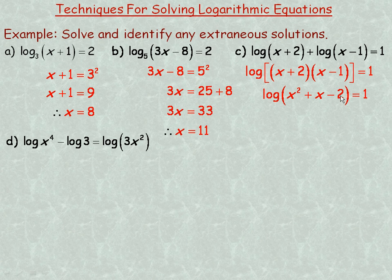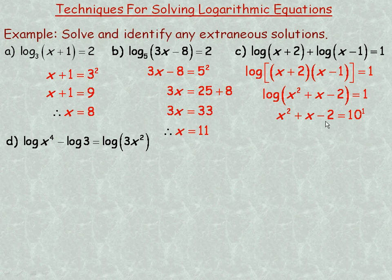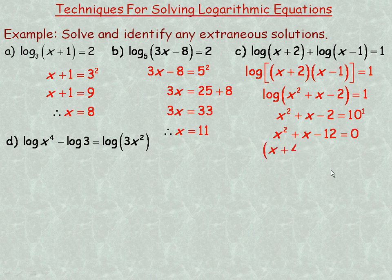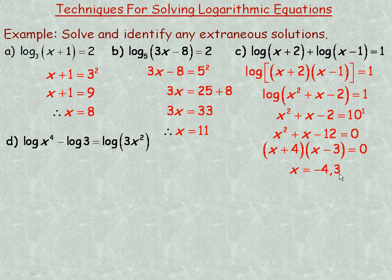Now it's the same kind of equation as a or b: one single logarithm equals a constant. This is the common logarithm, so the base is 10. So 10 raised to the power of 1 equals x squared plus x minus 2, giving x squared plus x minus 2 equals 10. That's a quadratic, so subtract 10 from both sides: x squared plus x minus 12 equals 0. Factoring, I need two numbers that add to 1 and multiply to negative 12 — those are 4 and negative 3 — giving factors x plus 4 and x minus 3. Setting each to 0 gives x equals negative 4 and x equals 3.